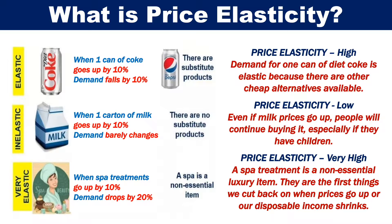So let's look at an example of where price elasticity is low. Even if milk prices go up, people will continue buying it. Especially if they have children, there are no substitute products to milk. So when one carton of milk, in this example, goes up by 10%, demand barely changes.